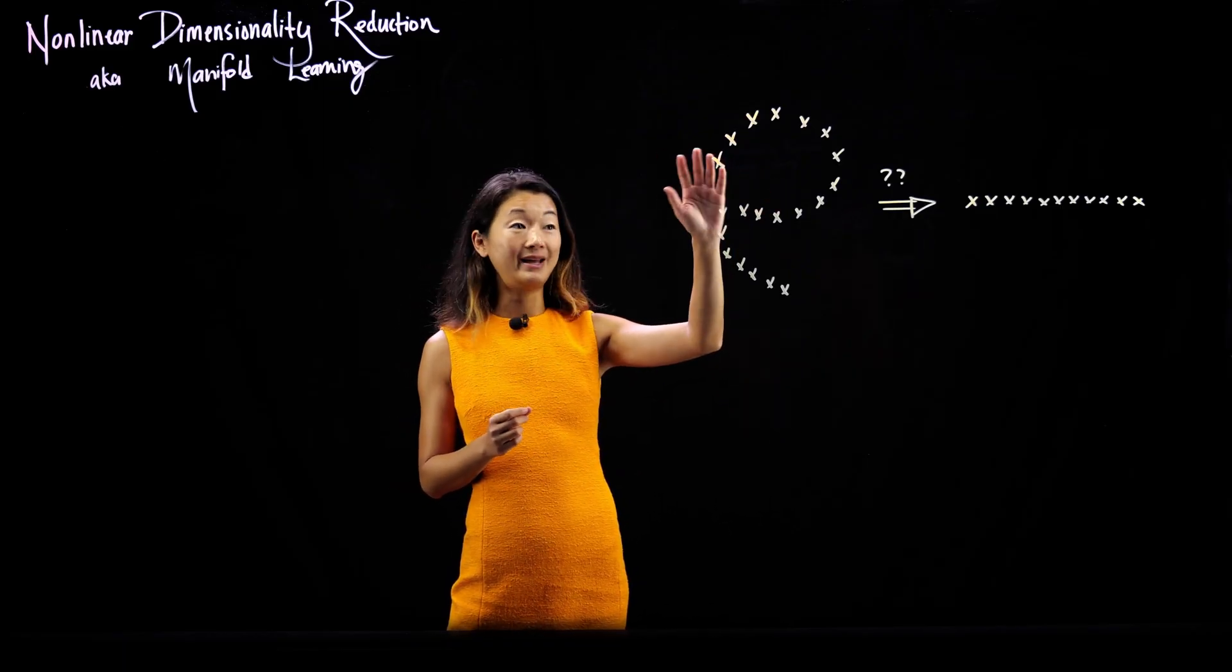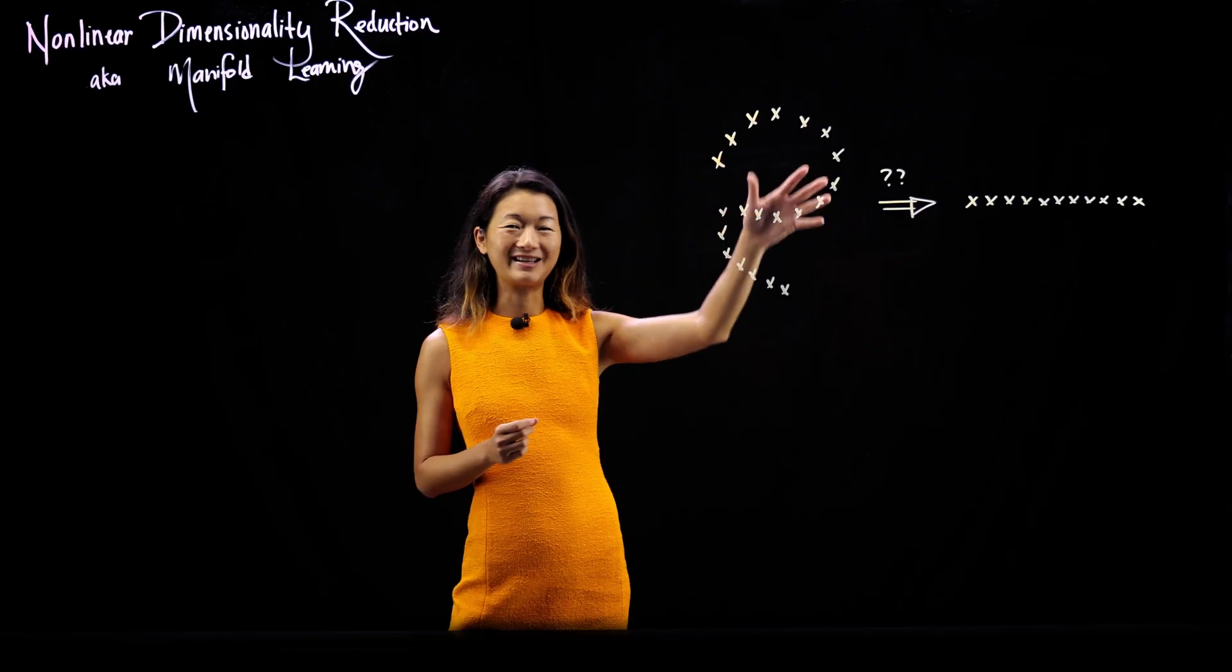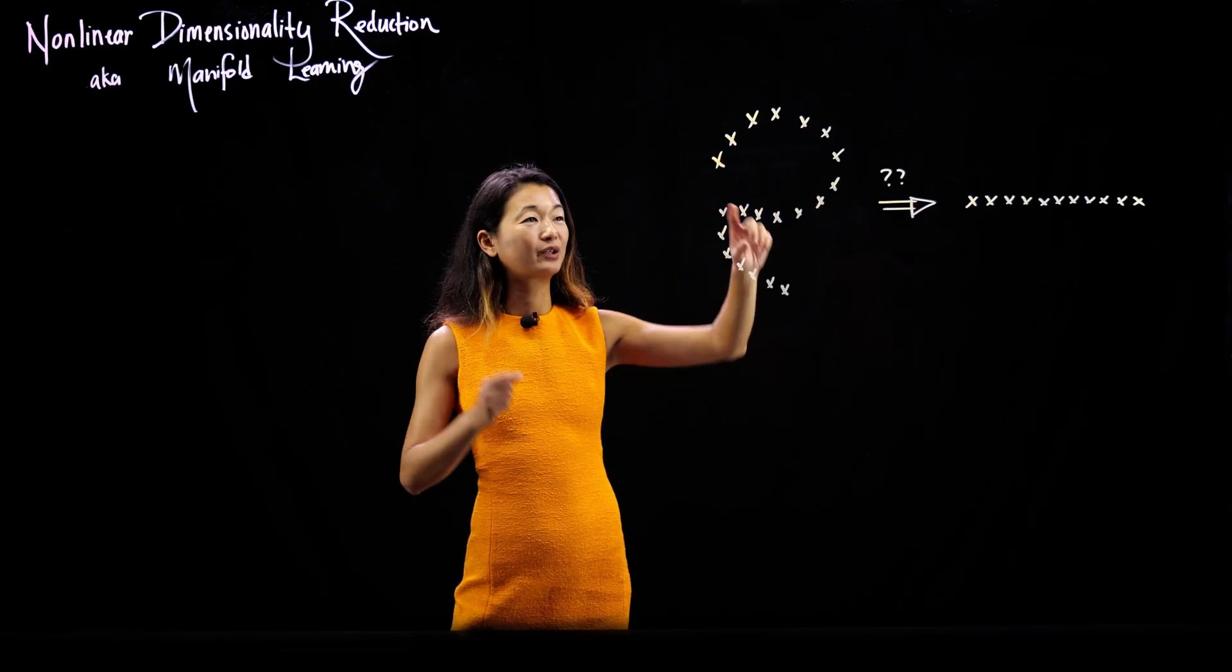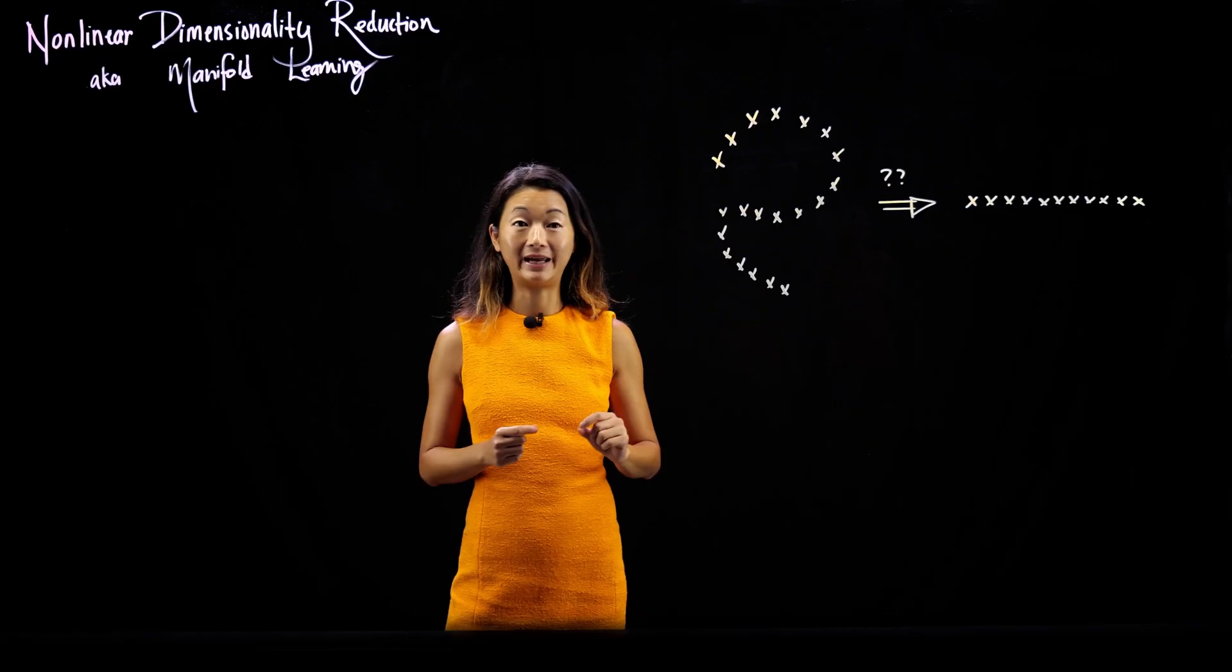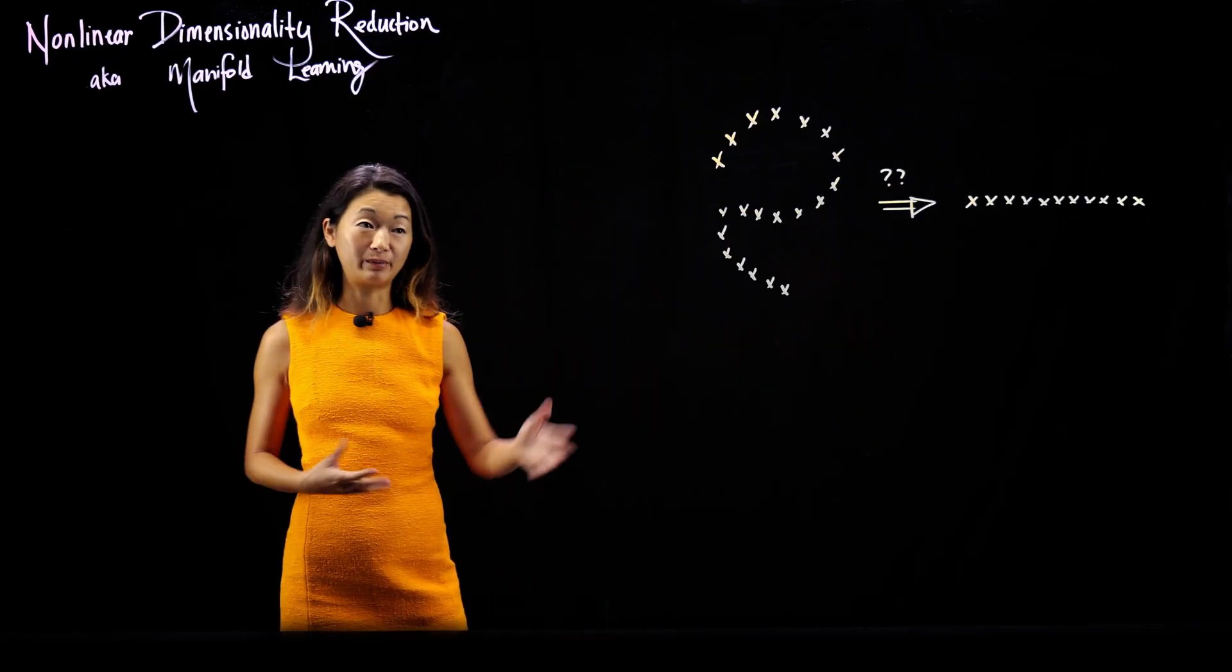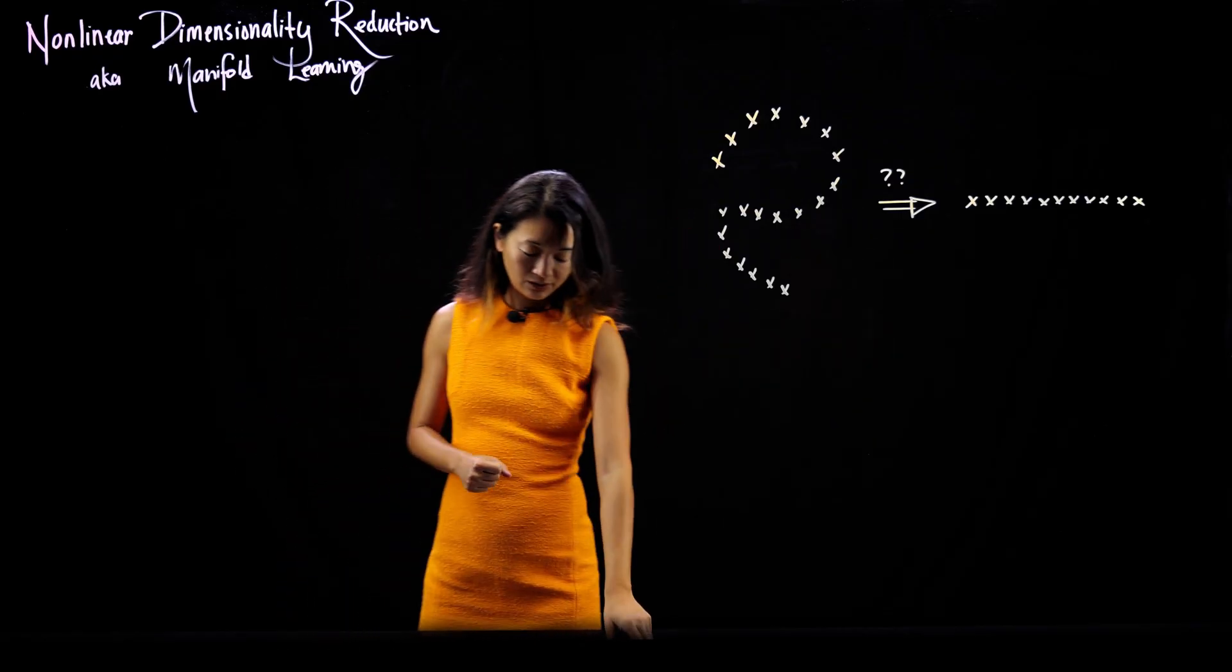So this is the simplest version of a non-linear dimensionality reduction problem that we need to be able to solve. Taking this two-dimensional XY coordinates of this S curve, flattening out and learning that these are actually connected in this way, so that my data can be more simply and straightforwardly represented as a line over there.